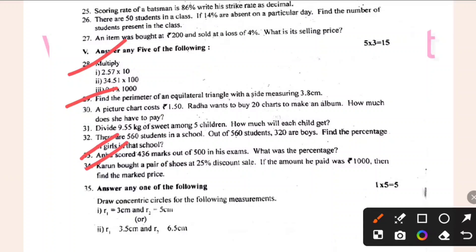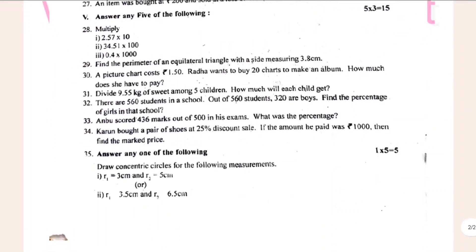Draw concentric circles for the following measurements. R1 is 3cm and R2 is 5cm. R1 is 3.5cm, R2 is 6.5cm.